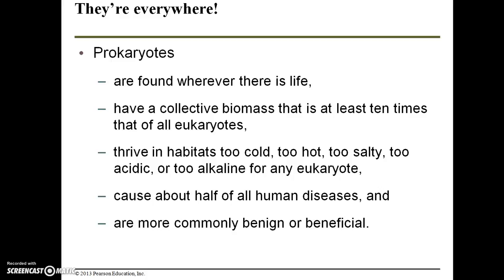Prokaryotes are still very abundant and very diverse — they're found wherever there is life. They have a collective biomass that is at least 10 times that of all eukaryotes. So despite being on average much smaller than eukaryotic cells, if you were to gather all prokaryotic cells on Earth and weigh them, their biomass would be at least 10 times that of all eukaryotic cells. They thrive in habitats that are too cold, too hot, too salty, too acidic, or too alkaline for any eukaryotic cell. They cause about half of all human diseases, but they're most commonly benign or beneficial. I'm going to go ahead and pause here, and I'll pick up in the next recording.